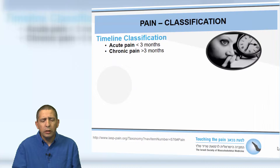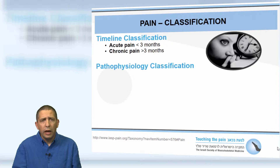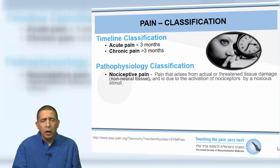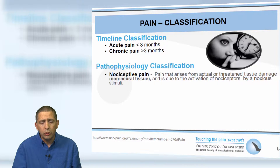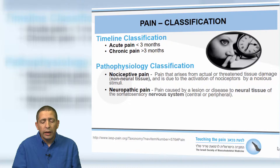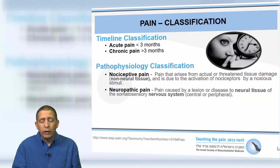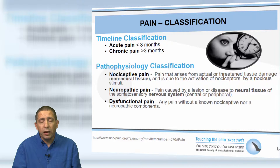Pain classification. According to the timeline classification, we classify acute pain as any pain under three months and chronic pain beyond three months. According to the pathophysiology classification, we identified three main types of pain: nociceptive pain, which arises from actual or threatened tissue damage in non-neural tissue due to activation of nociceptors by a noxious stimulus; neuropathic pain, caused by a lesion or disease to neural tissue of the somatosensory nervous system, central or peripheral; and dysfunctional pain, any pain without a known nociceptive nor neuropathic component.